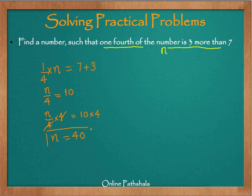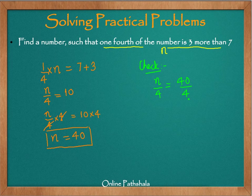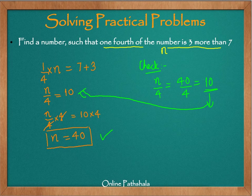n equals 40 is the number we are looking for. As we discussed, we should check the solution by substituting n equals 40. We have 40 divided by 4, which is equal to 10, which is nothing but the right hand side. Therefore, n equals 40 is the number we are looking for. This was another example where we applied algebraic equations.